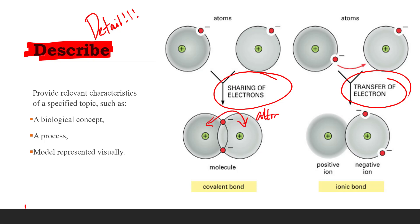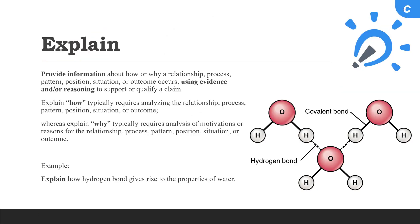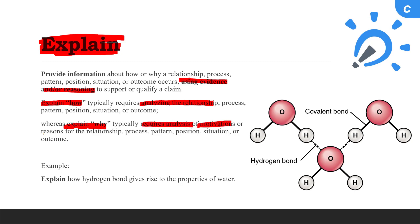We need to talk more about the sharing or transferring of electrons between the atoms and how they lead to the formation of the bond. Next, explain. If we were tasked to explain something, we need to provide information as well, just like describe, but the description that we provide has to have a cause and effect connection to what the question is asking. If, for example, it is asking us to explain how, which means we need to provide analysis of the relationship. If it's asking why, it would require us to analyze the motivations or the reasons for the relationship.